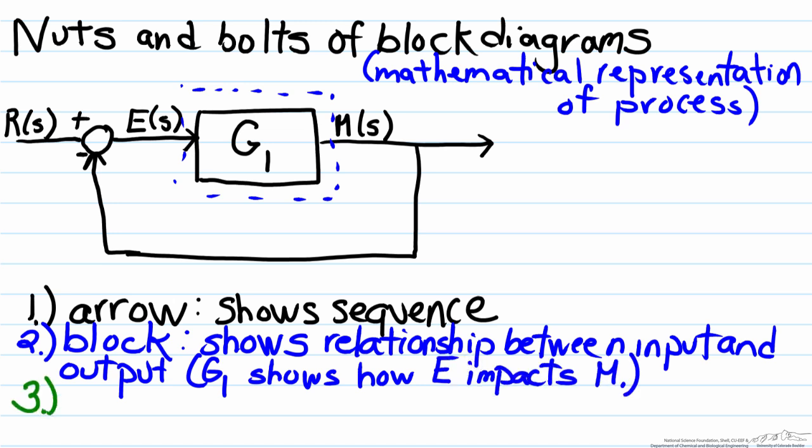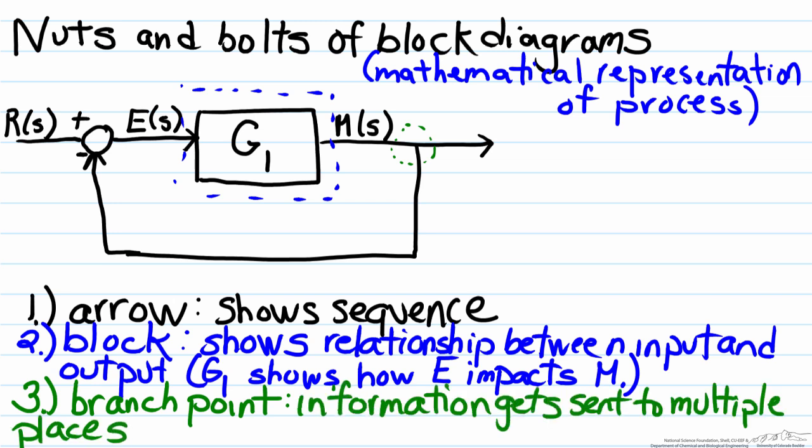The third major aspect of a block diagram is the branching point, shown on the right-hand side of the diagram. The branch point represents where information gets sent to multiple places. The best corollary for this is the idea of composition in mass balances.